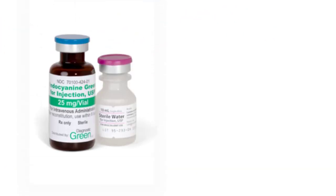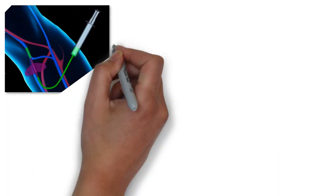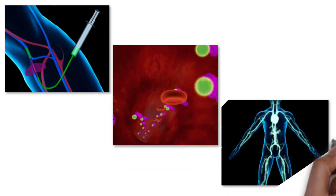A special dye called indocyanine green, or ICG, is administered to the patient. This dye safely attaches to the circulating blood. When illuminated with an infrared light, the dye fluoresces or glows and can be seen by the camera.